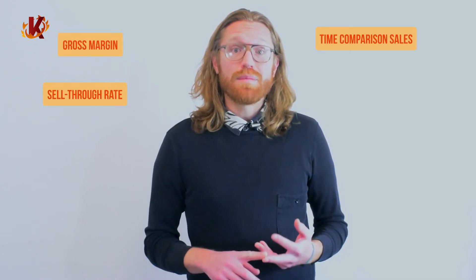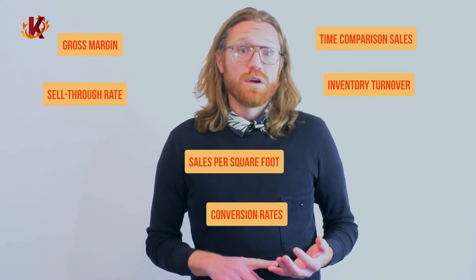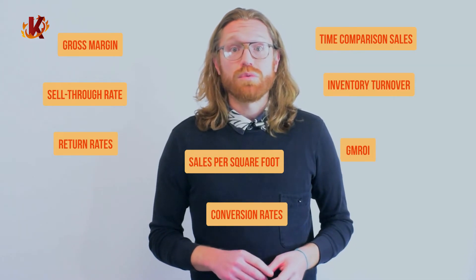These commonly include gross margins, sell-through rates, time comparison sales, sales per square foot, conversion rates, inventory turnover, return rates, and gross margin return on investment. These types of big picture metrics help small businesses identify successes and pain points, allowing them to further optimize what's working and scale back on what's not.